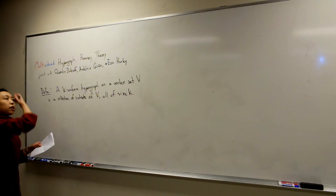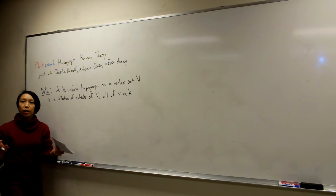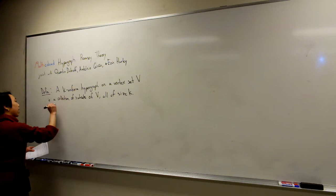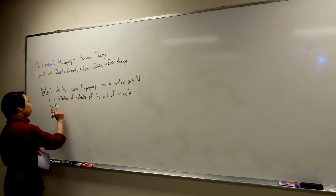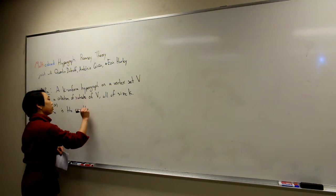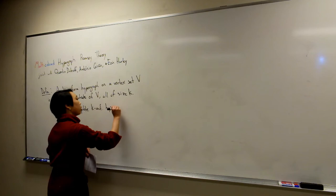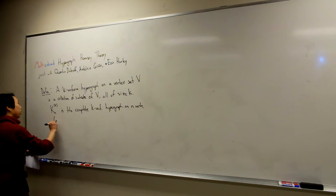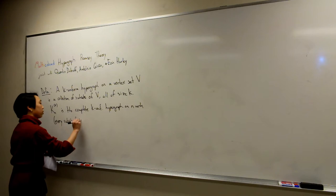K-uniform means all edges have size K — it's a collection of subsets of V, all of size K. I'll use the notation K_N^K to mean the complete K-uniform hypergraph on N vertices, where every subset of size K is an edge.